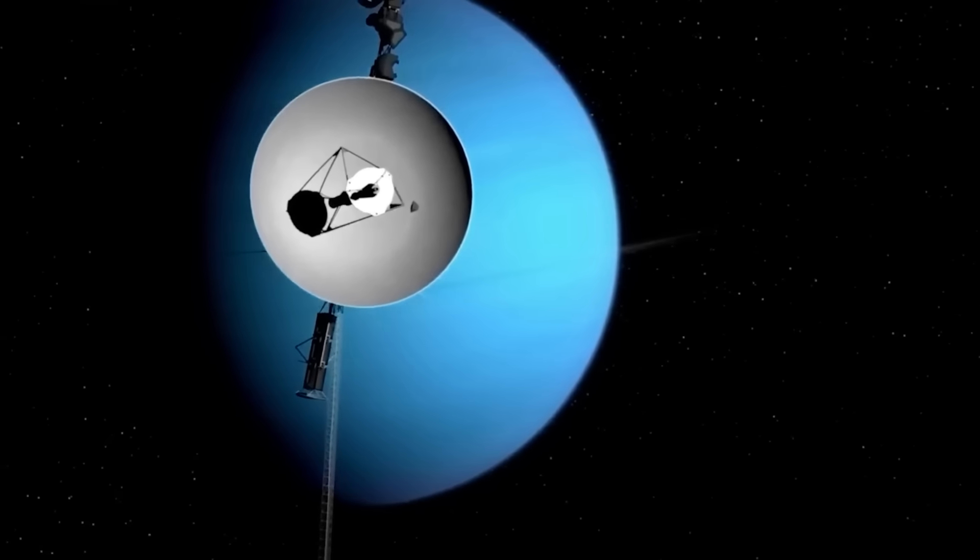A further justification for ending the mission is the distance the voyagers have traveled from Earth. At the moment, sending a radio transmission to Earth takes 22 hours for Voyager 1 and 18 hours for Voyager 2.